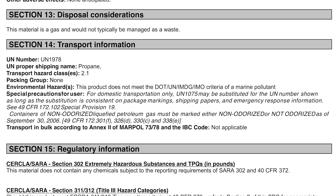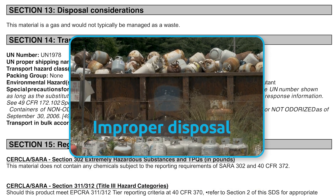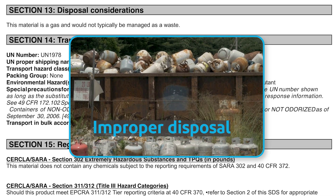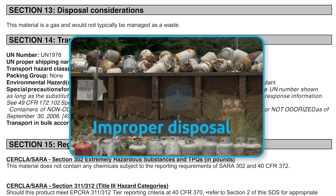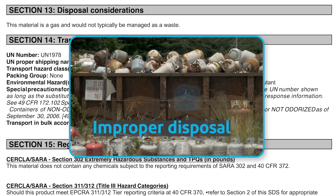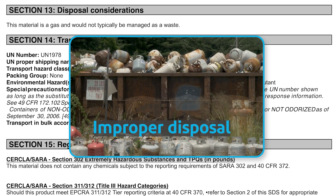Section 13: Disposal Considerations. This section explains how to safely dispose of a chemical and its packaging, outlining recommended methods, regulatory requirements, and environmental precautions. Since propane is a gas, it would not typically be managed as waste, but proper handling of empty cylinders is still essential to prevent leaks or hazards.